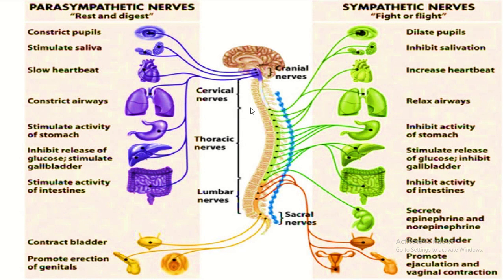Looking at the nerve regions: cranial nerves originate from the brain, cervical nerves from the cervical region, thoracic nerves from the thorax, lumbar nerves from the lower back, and sacral nerves at the base. Parasympathetic stimulates the activity of the stomach and stimulates digestion.